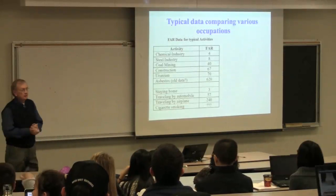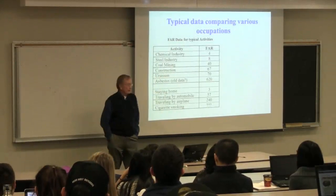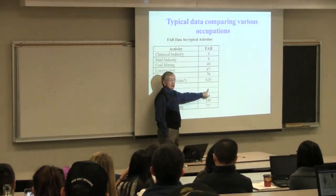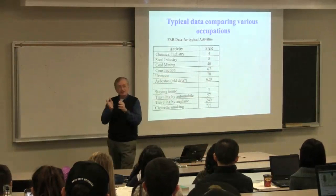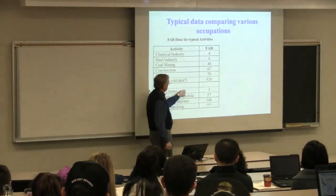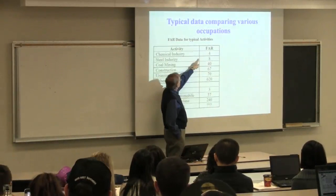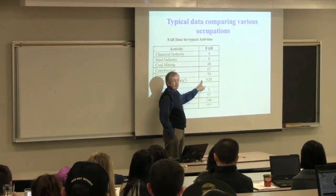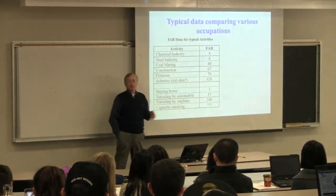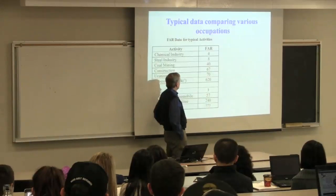How good or how bad are we in the chemical industry? This is the FAR — how many people get killed in a thousand lifetimes of work. Staying at home is three. The chemical industry is four. Steel industry is eight. Mining is 40. Working with asbestos, 620. We know that Quebec was exporting asbestos around the world for a long period of time, saying 'oh, it's not dangerous.' 620 compared to three — that's 200 times.